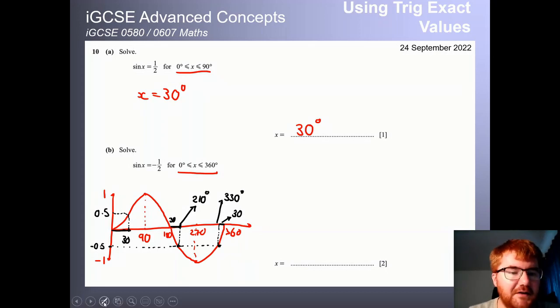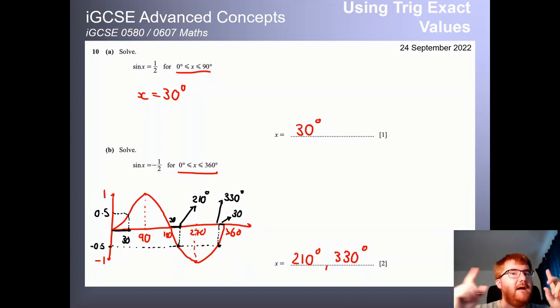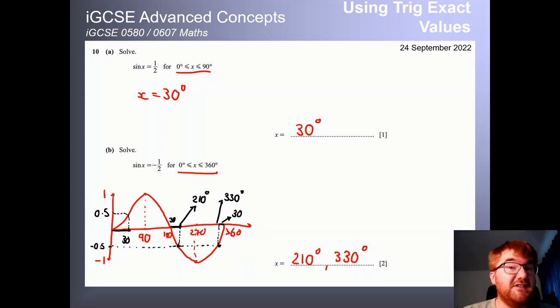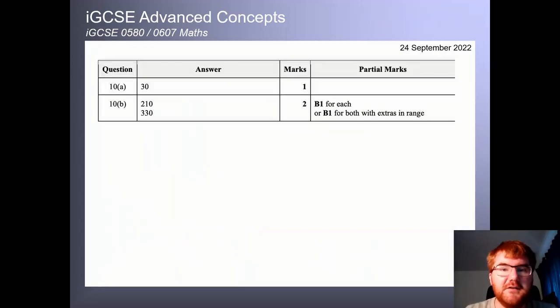So those are our two answers here. So let me write those in. Again, two mark question, 210 degrees and 330 degrees. So by being able to use those exact values and apply that to some general trigonometric equations is a really useful concept to understand at home and also good for IB and A level later on. So those are the answers there for you. And then you can see where you pick up maybe one mark instead.